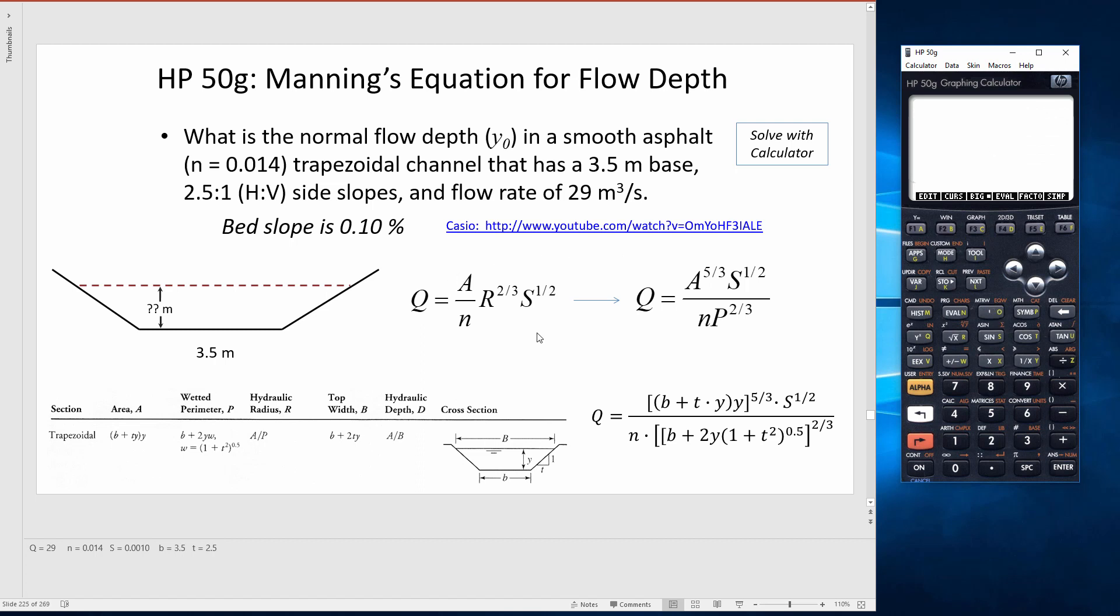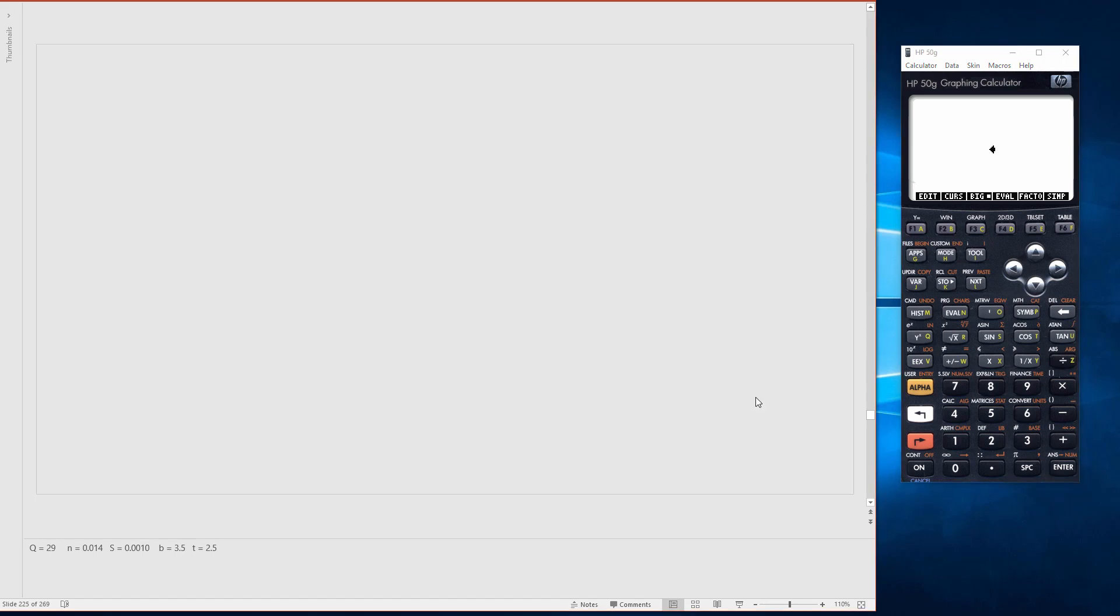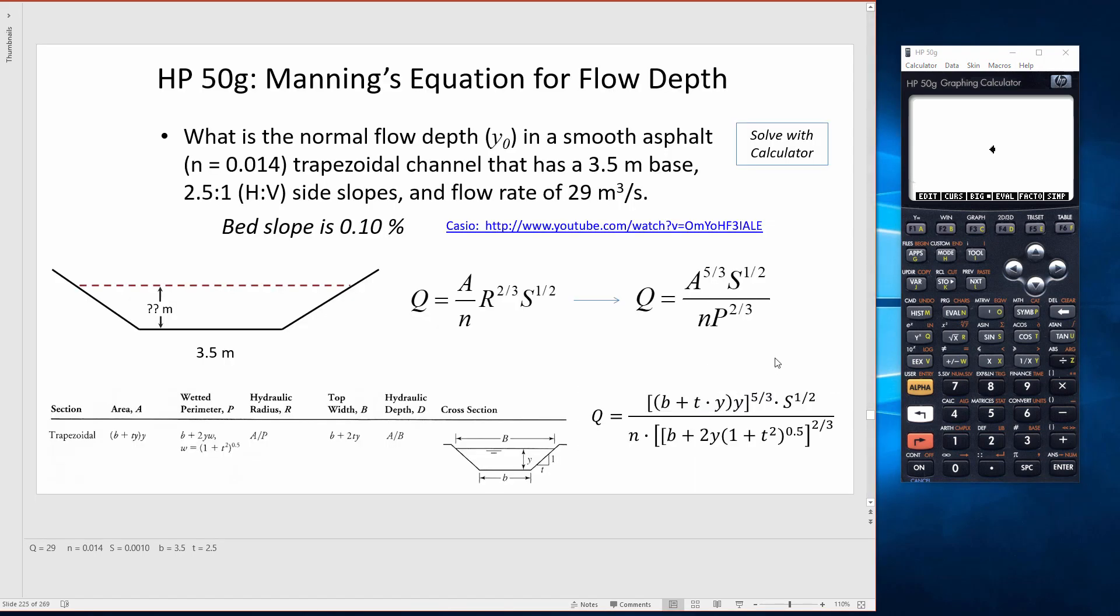Here's Manning's equation. If we combine it a little bit for calculational simplicity, we know that the hydraulic radius is area divided by wetted perimeter. So here is area to the five-thirds power, wetted perimeter to the two-thirds power. And then here I've expanded out how to substitute in the parameters we know for the area and wetted perimeter as a function of this unknown depth.